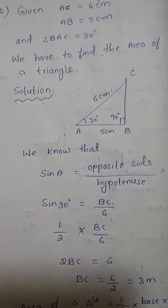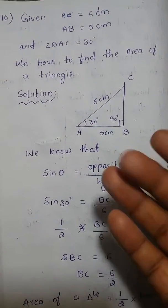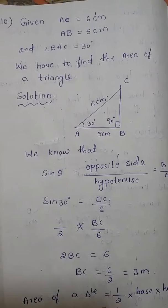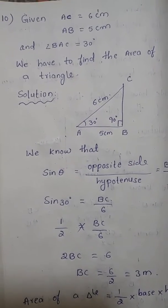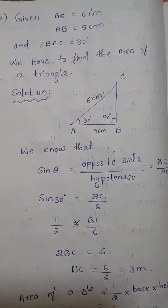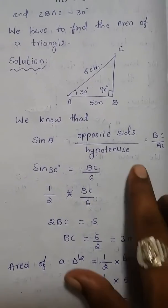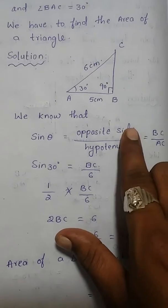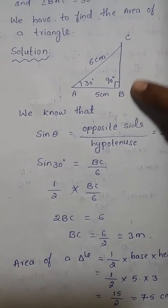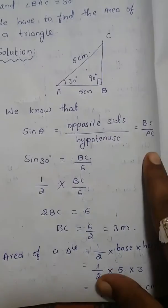The height is nothing but the opposite side. I know the adjacent side as well as the hypotenuse. I have to use a formula related to the opposite side and hypotenuse to calculate the opposite side. Sin theta equals opposite side divided by hypotenuse, so here the opposite side is BC and the hypotenuse is AC.